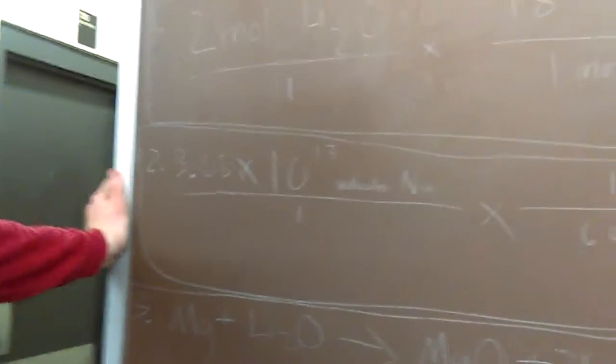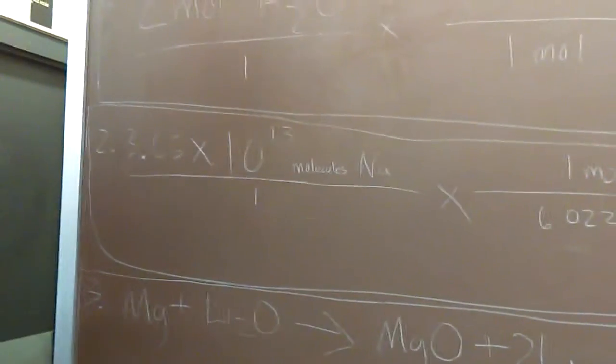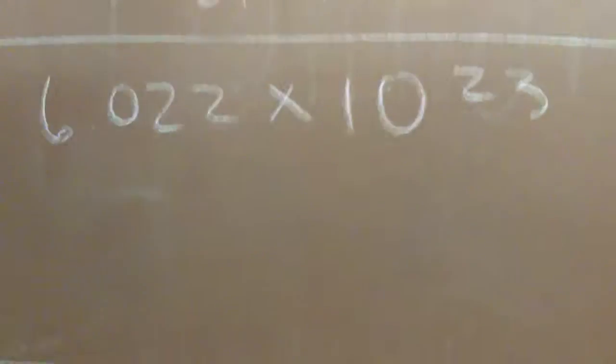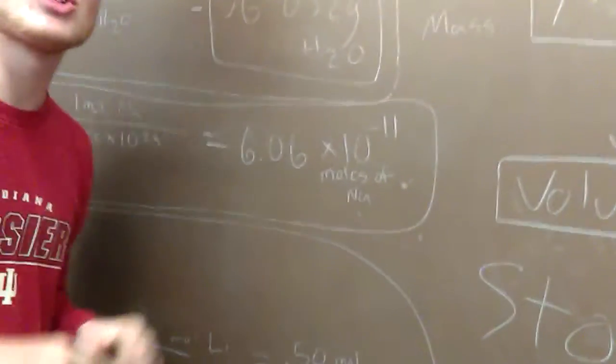3.65 times 10 to the 13th molecules of Na. And we want to see how many moles of Na there are. You see, using Avogadro's number, 6.022 times 10 to the 23rd, we can figure out that we end up with 6.06 times 10 to the negative 11 moles of sodium. You know, negative, that means it's super tiny. That is correct.